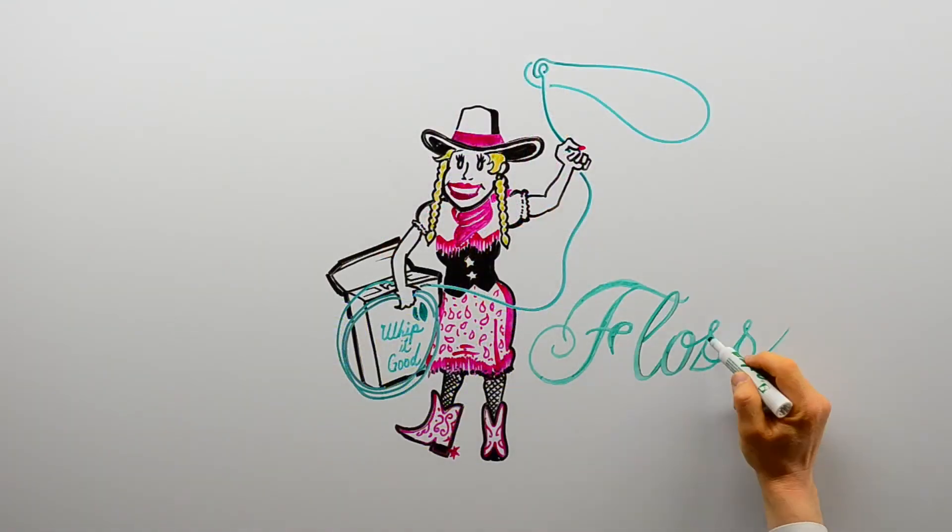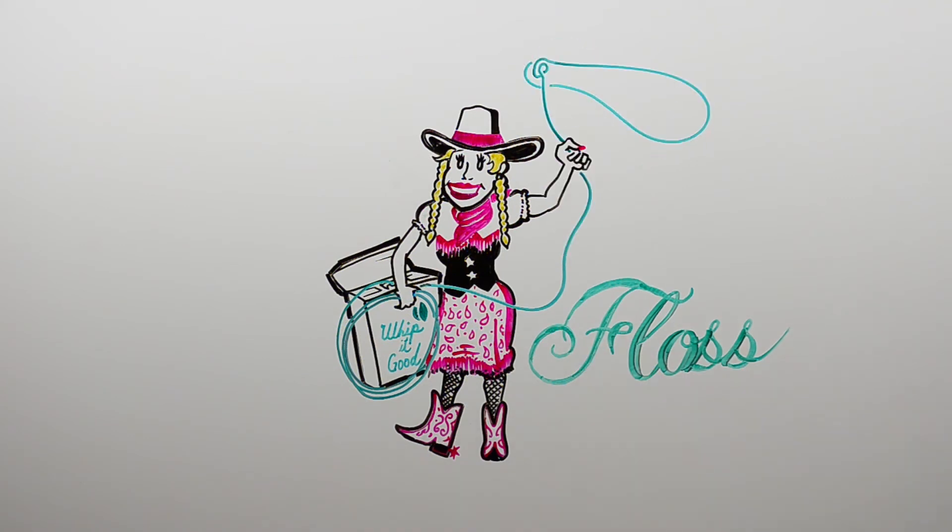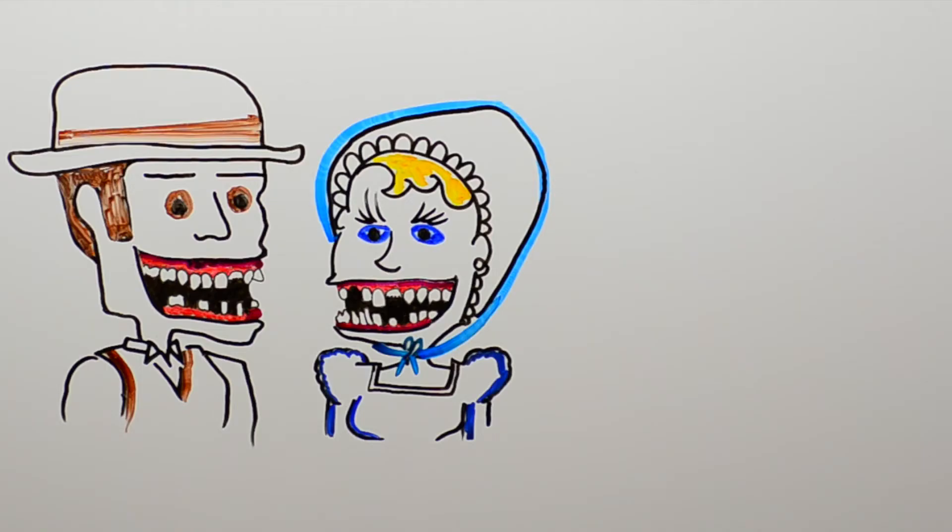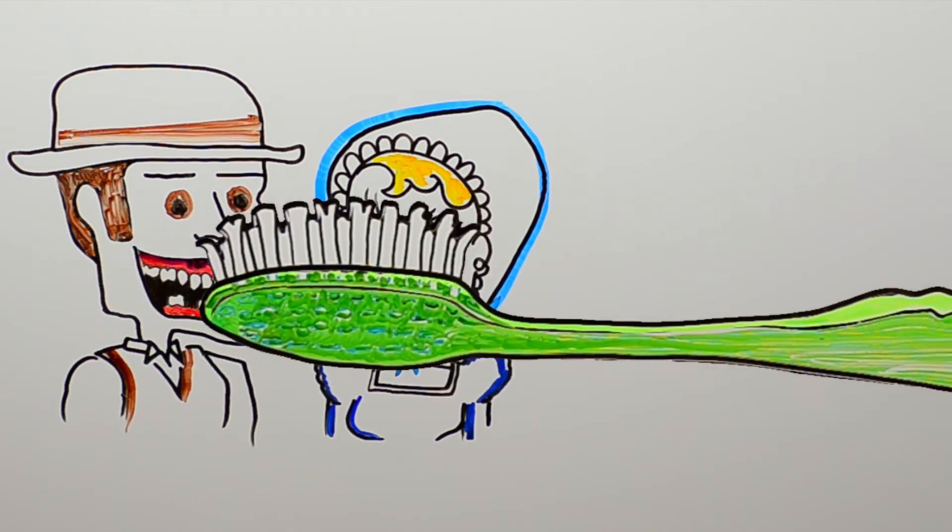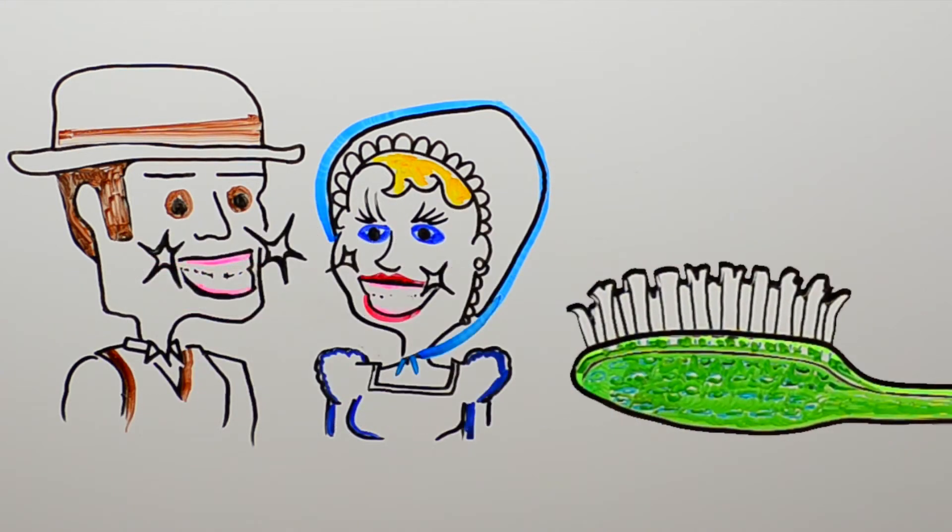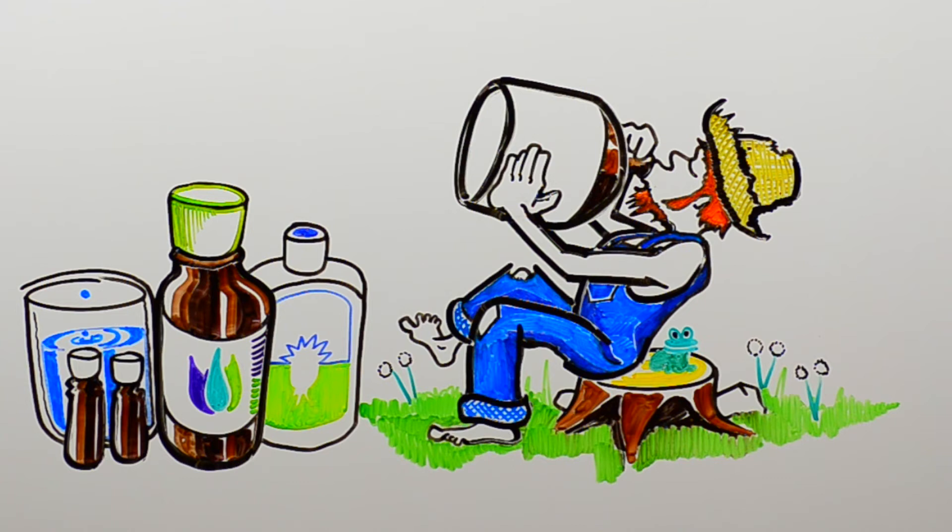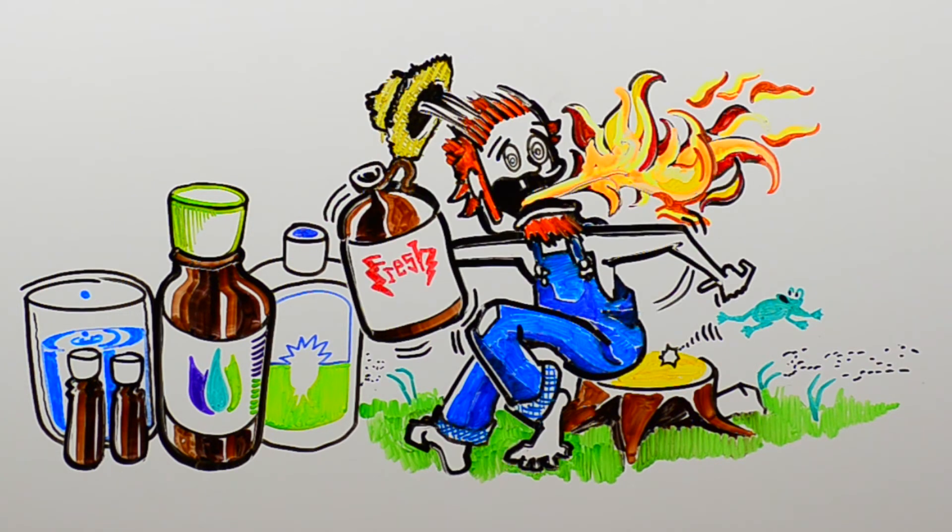One, regular flossing. Hog-tie those varmints. Two, brushing. Whoa, easy does it. Tiny circles now, not so hard. Three, non-alcoholic rinse. Just because it burns like moonshine, don't mean it's doing you any good.